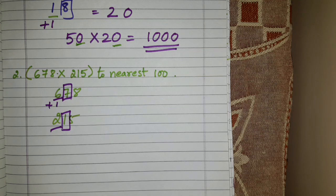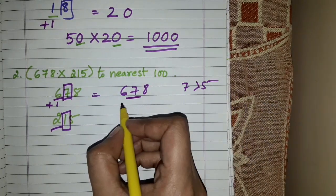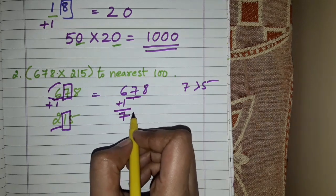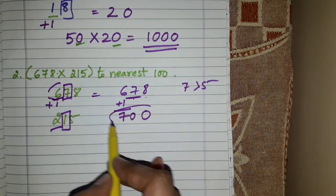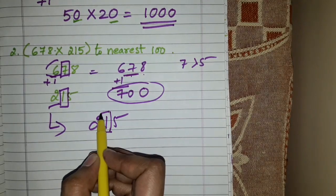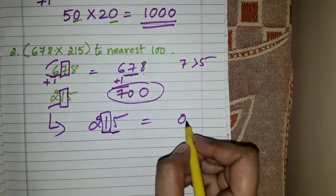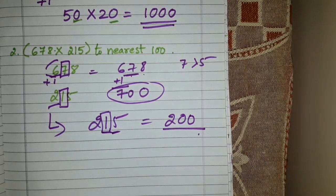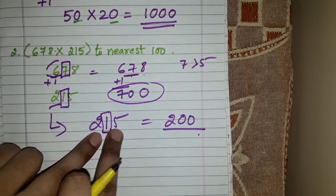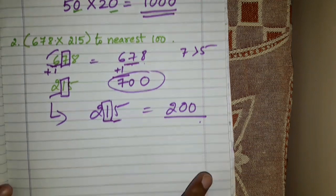For 678: 7 is bigger than 5, so it gives plus 1 to 6, making it 7, and the remaining digits become 0 — so the first rounded number is 700. For 215: 1 is less than 5, so it becomes 0, the other digit becomes 0, and 2 remains the same — giving 200. When a digit is less than 5, it becomes 0 and all digits to its right also become 0, while digits before remain the same.